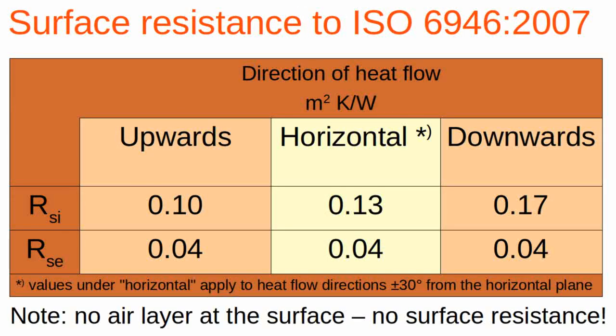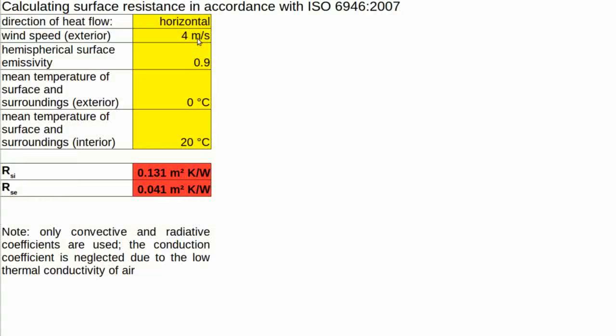Now these are tabular values and they are typically fine. A couple of assumptions underlie the genesis of these values. Conduction as a fractional heat transfer is neglected due to the low thermal conductivity of air, and the emissivity of the surface is assumed to be 0.9, which will apply to most surfaces but not to reflective surfaces like shiny metals.